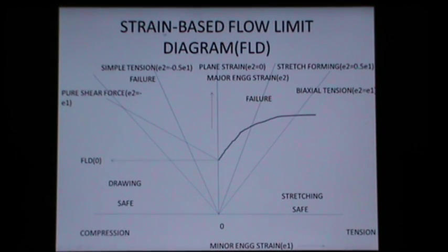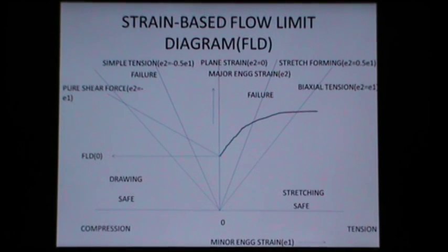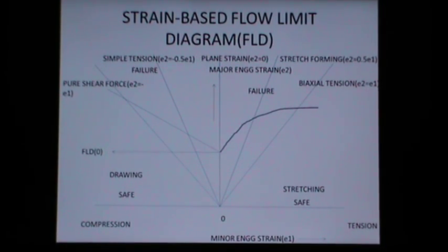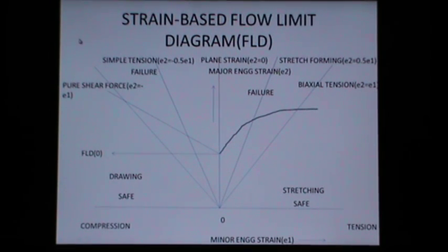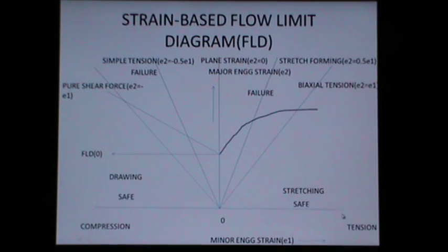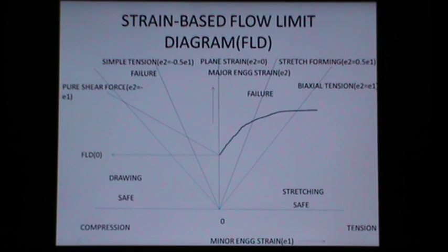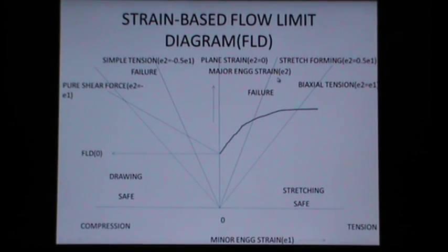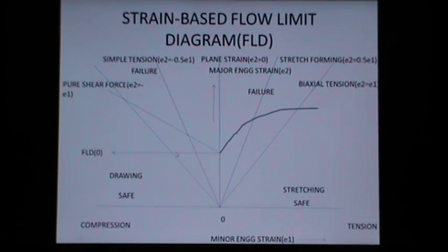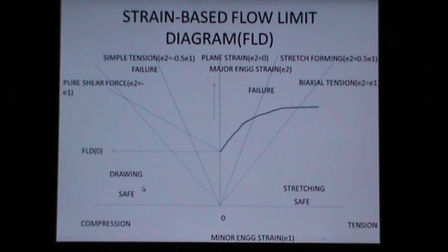This presentation has focused on the strain-based forming limit diagram (FLD), which is comparatively easier than the stress-based FLD. In the strain-based FLD, the drawing side is on the left and the stretching side is on the right. These curves — a linear curve on the drawing side and a non-linear curve on the stretching side — represent the transition between regions of safety and failure while drawing and stretching a steel bar or rod.